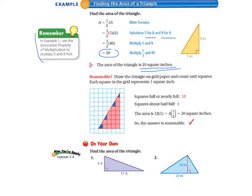Let's look at our little remember box — that's always something important. In example 1, use the associative property. It's usually easier to multiply B times H first, rather than taking half of 5 to get 2 and a half and then multiplying that by 8, because that's hard to do.